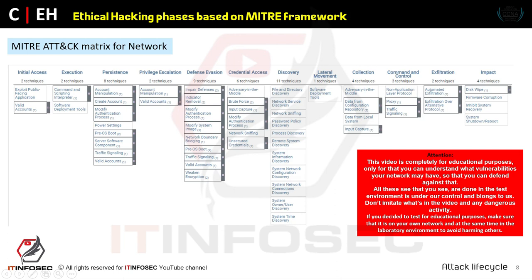For credential access, brute force against network services such as SSH or Remote Desktop is common. In discovery, many items are available similar to the Windows matrix, such as network sniffing and password policy discovery. Lateral movement is approximately the same. Collection includes configuration repository data or input captures. For C2, techniques include proxy, traffic signaling, or non-application layer protocols. For exfiltration, automated exfiltration is used. For impact, disk wipe can make all data on storage servers unrecoverable.